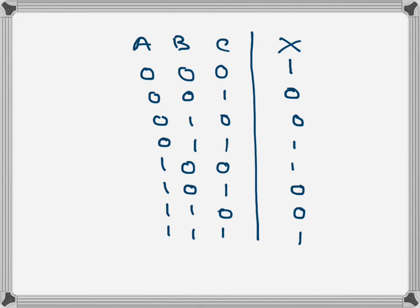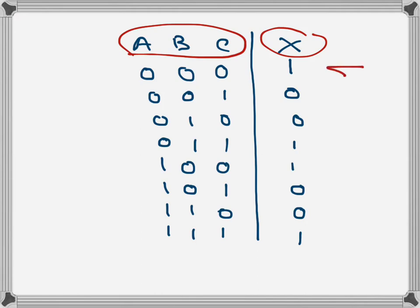A, B, and C are the three inputs and X is the output. This is an arbitrary truth table with three variable inputs and one output. We can see that there are four ones at the output. When we want to transfer the truth table into a K-map, there will be eight cells in the K-map because there are eight input combinations.